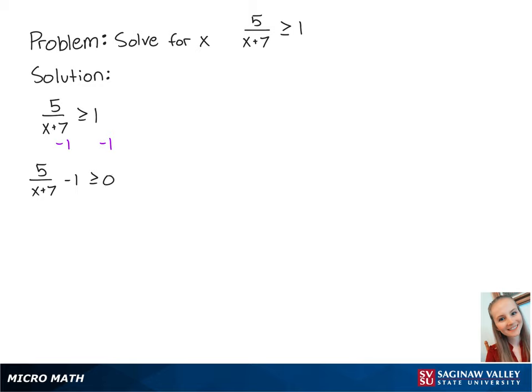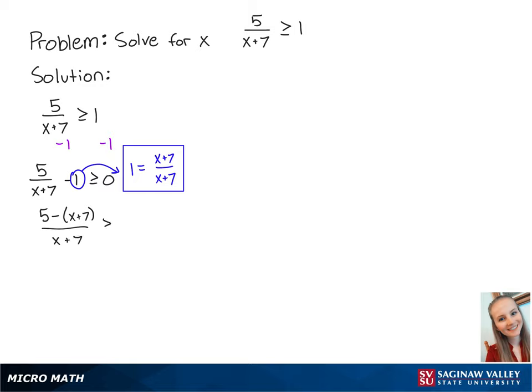Next, we want to get the two numbers on the left side merged together into one fraction. We're going to do this by using our knowledge that 1 is equal to x plus 7 over x plus 7. So using a common denominator of x plus 7, we have 5 minus the quantity of x plus 7 over x plus 7, which is greater than or equal to 0.